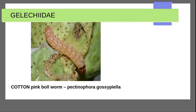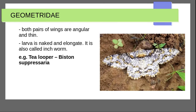Next family is Gelechiidae. Example: cotton pink bollworm — Pectinophora gossypiella. Next is Arctiidae moth family — Geometridae.